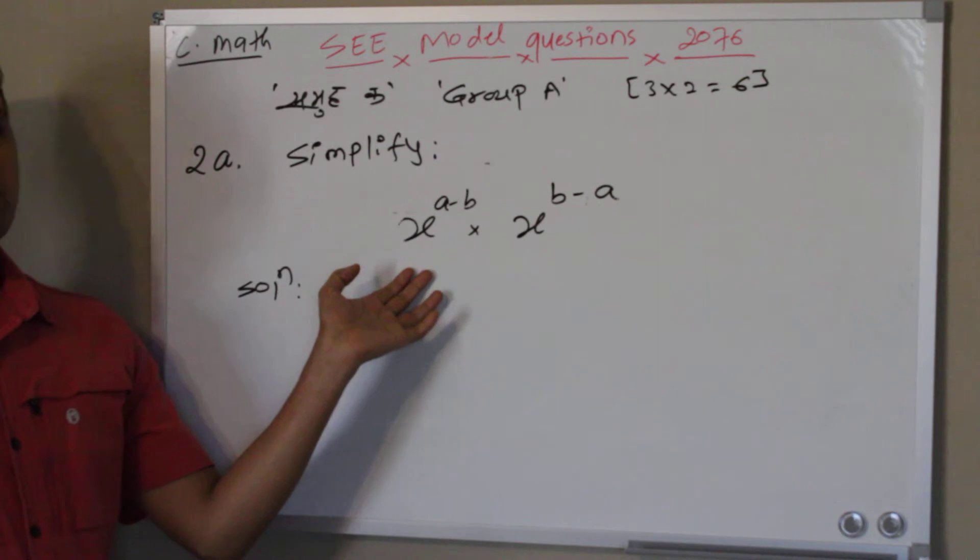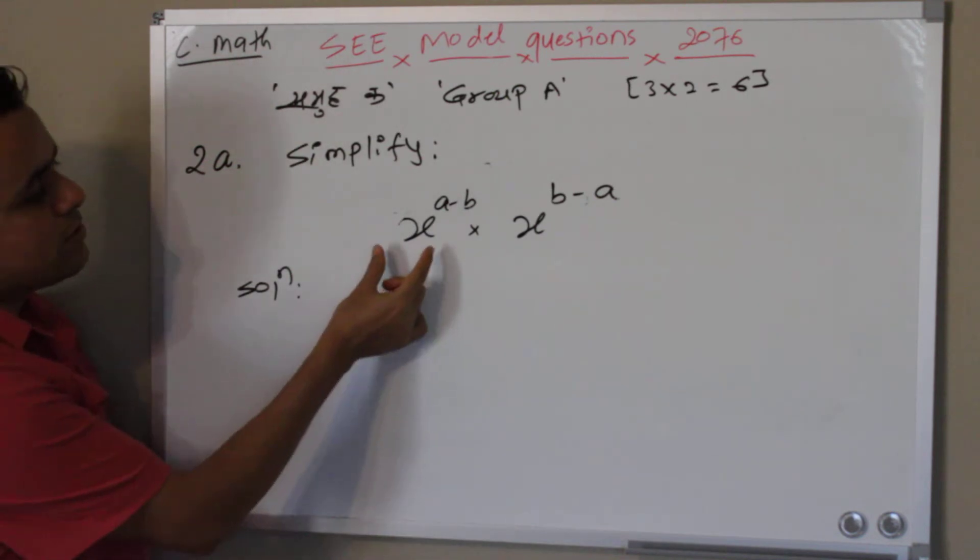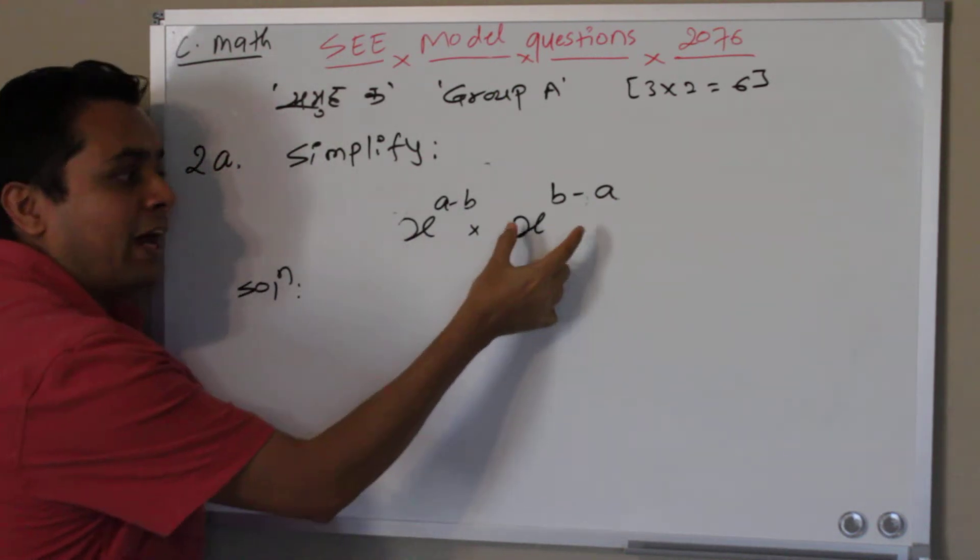Here we have to use the law of indices. We have two terms - one term and two terms.